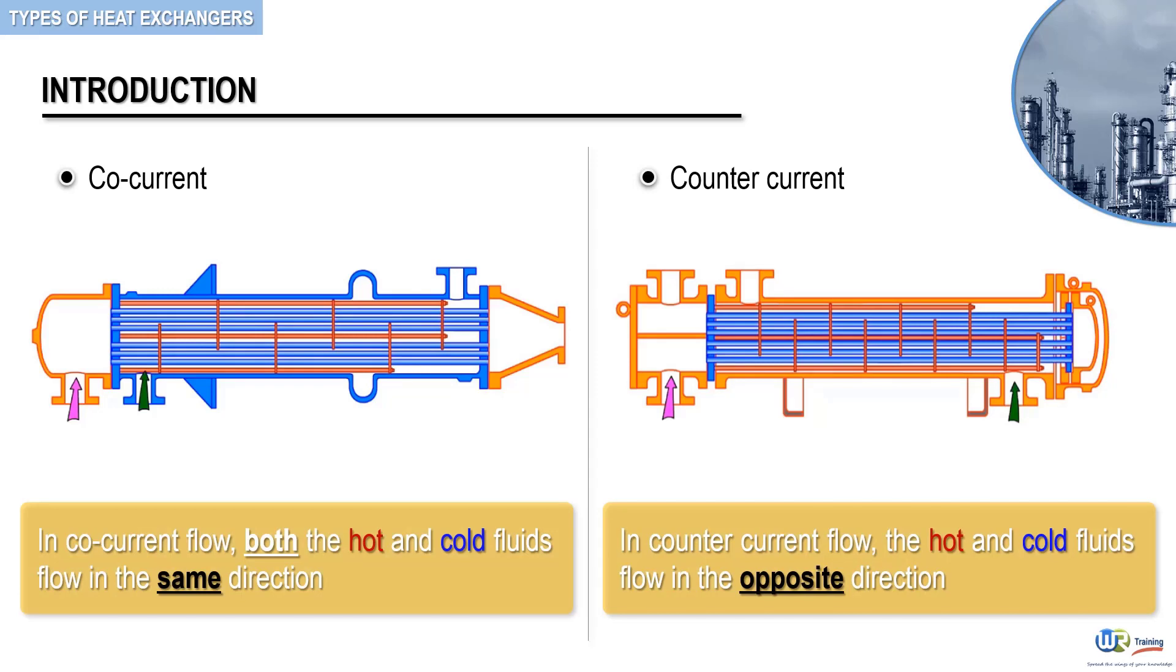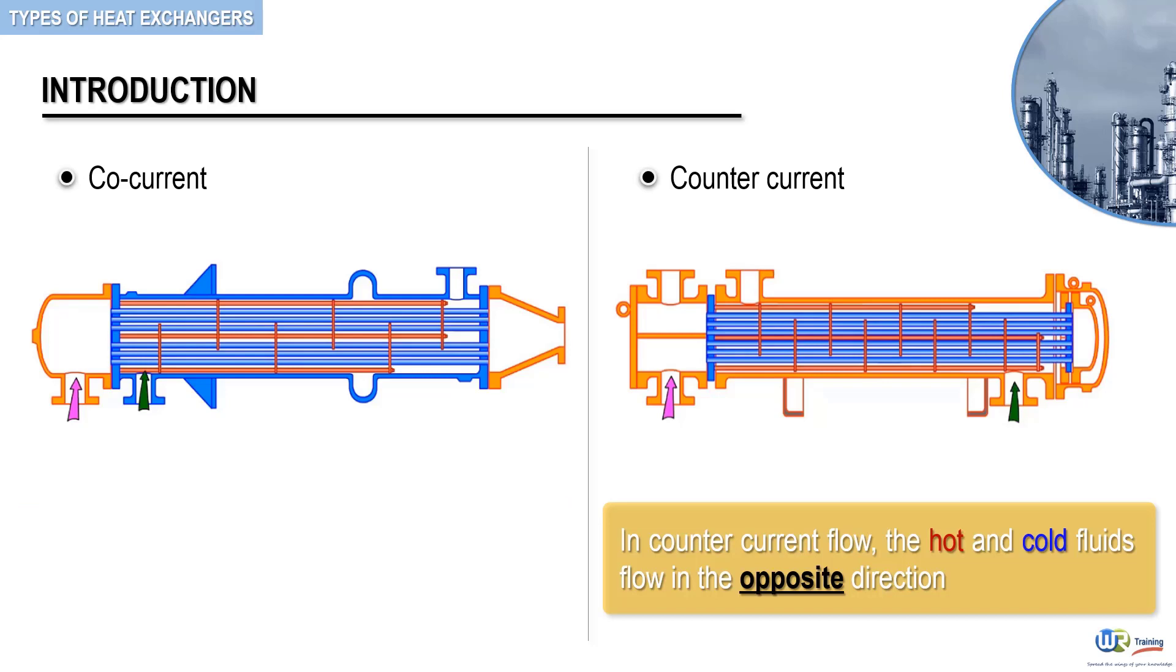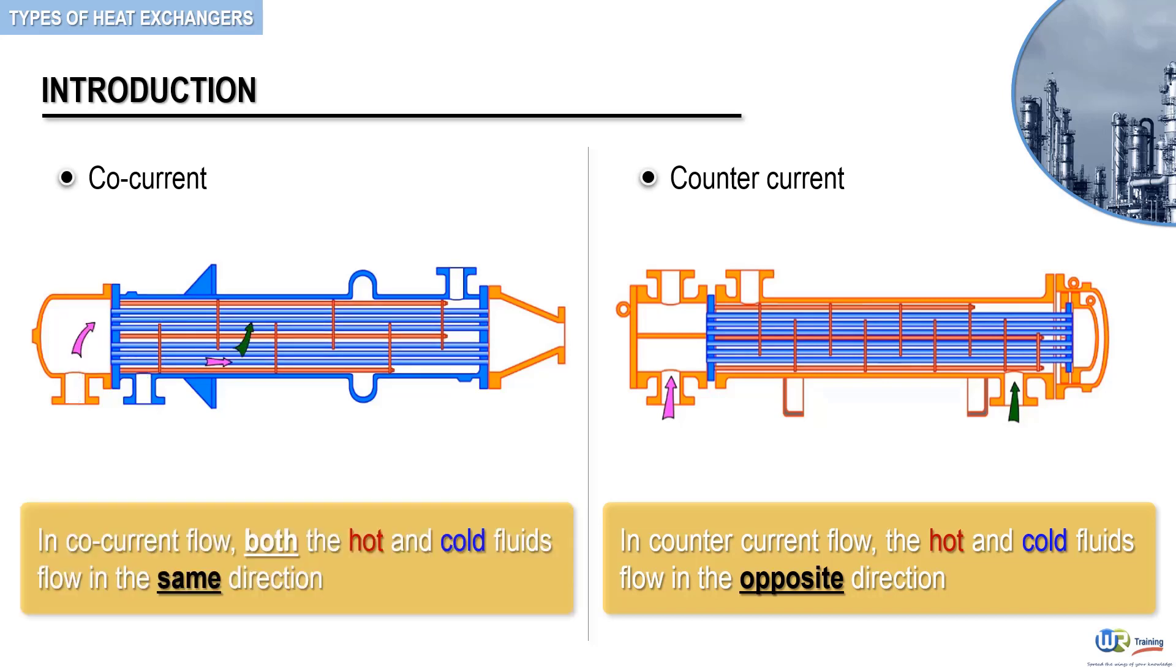On the left side of the screen, you can see a cross-sectional view of a single pass fixed tube heat exchanger in a co-current flow arrangement. It is assumed here that the hot fluid flows through the tubes while the cold fluid flows through the shell.